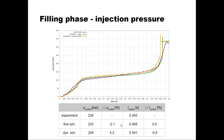This is a typical result of such a simulation. The purple line is the experimental result. At the beginning there is an increase in pressure as the sprue and tunnel gate fill, shown by a higher slope, and then a smaller slope as the entire geometry is being filled. At a certain point you switch over to the packing phase.